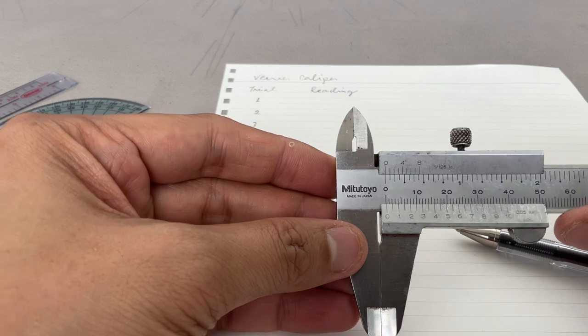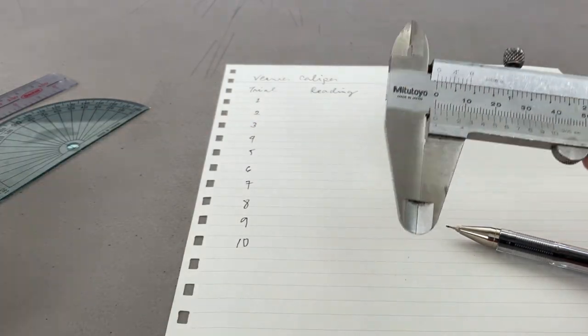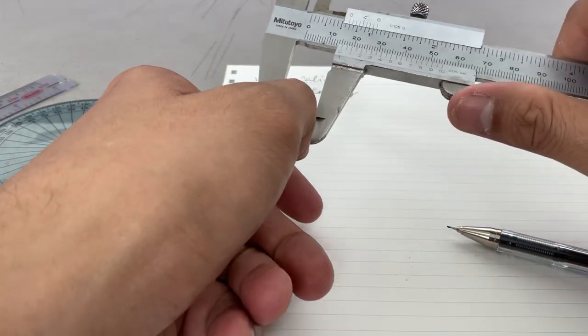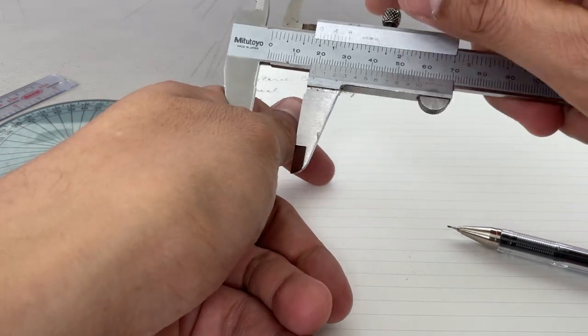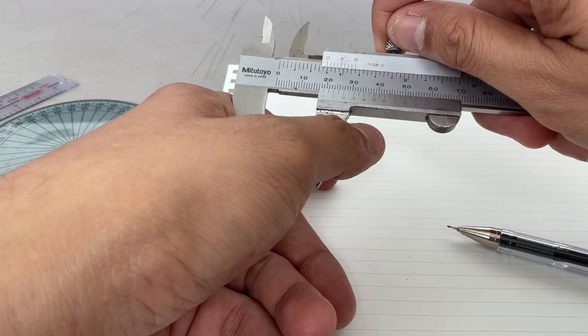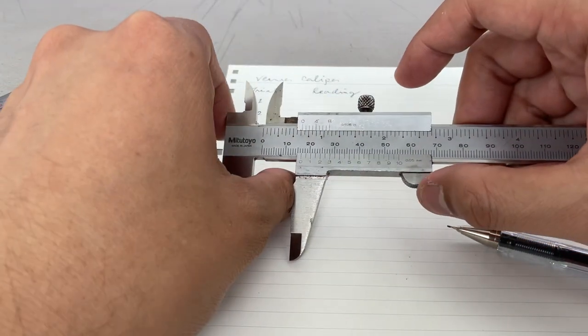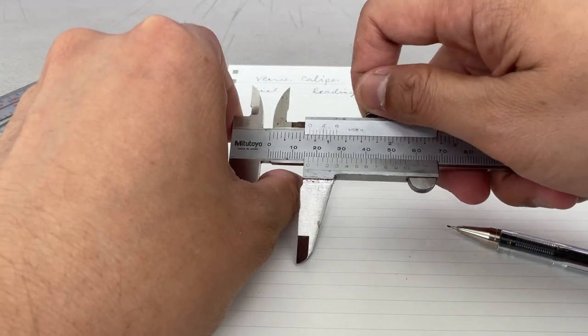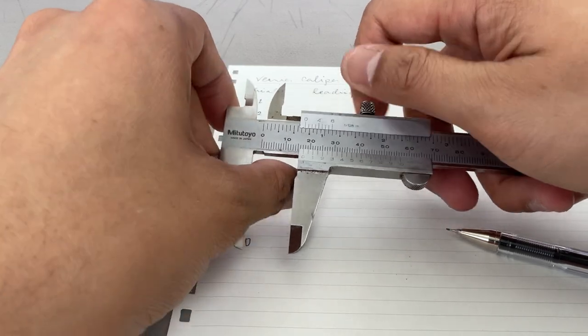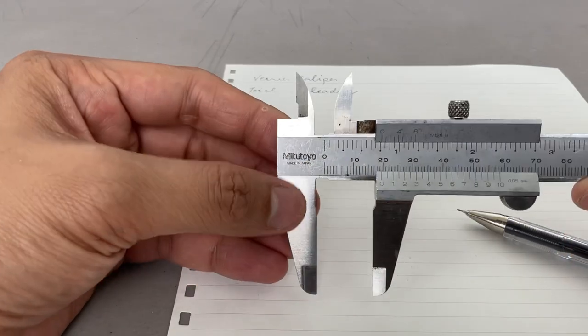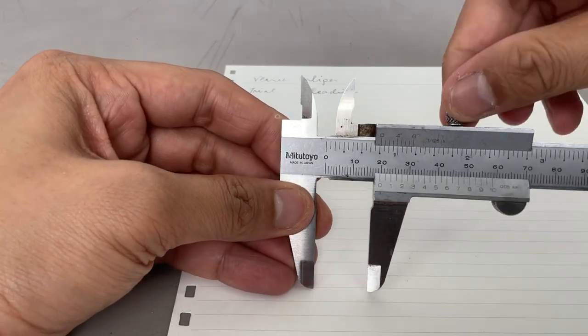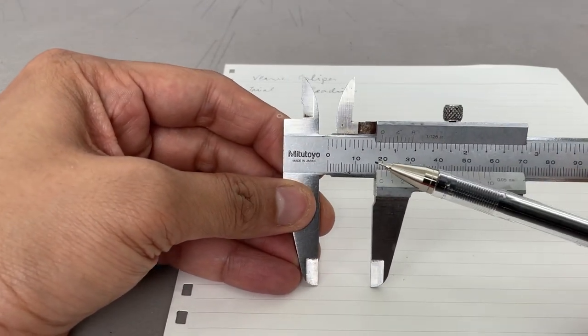So how do we measure? How do we use the vernier caliper? So let's say you want to measure the width of the thumb. You can lock it. You can lock it here.